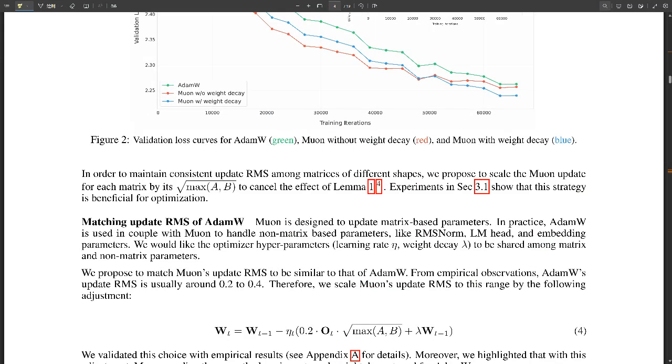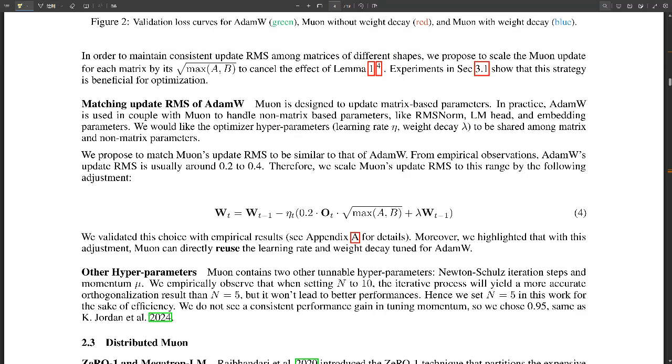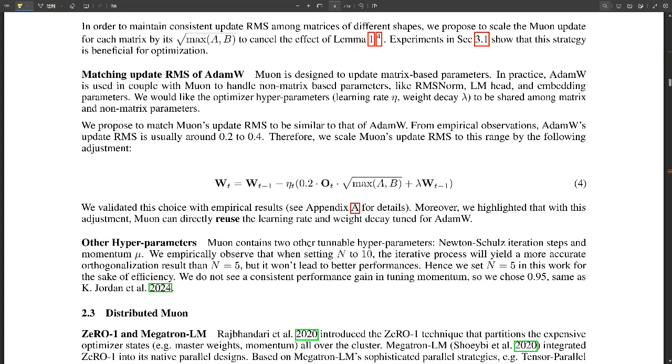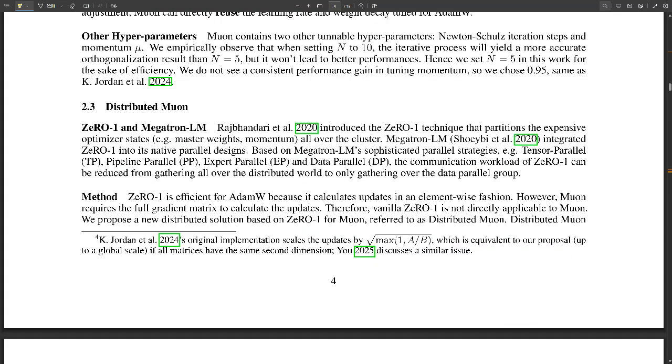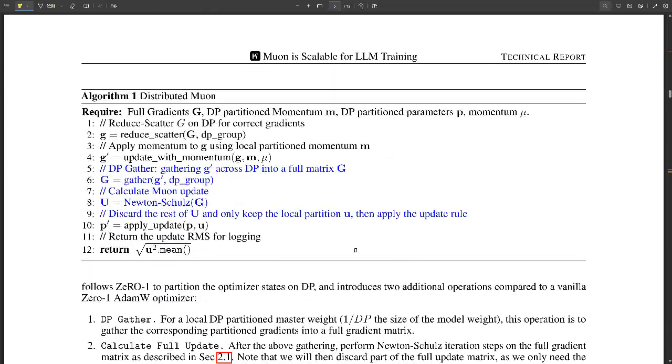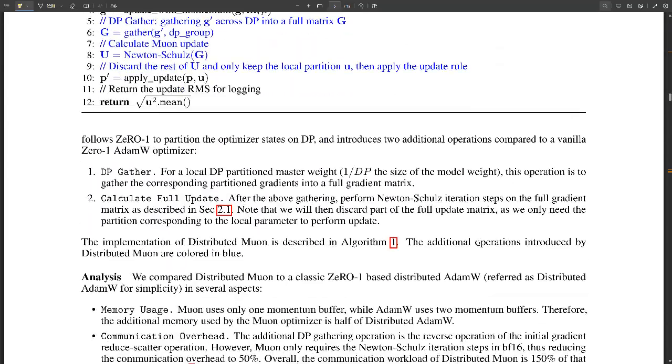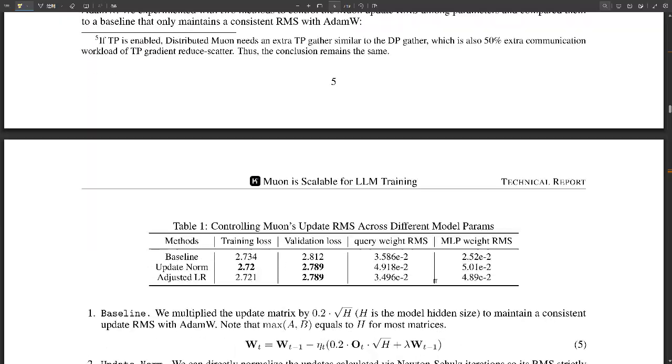Moonlight is a 3B, 16B parameter model, and it uses a mixture of expert or MoE architecture. Oh, hold on. Let's save the details about MoE and Moonlight for the next part. First, tell me, did Muon live up to the hype? Did it actually deliver? Oh, absolutely. Moonlight really blew expectations out of the water.